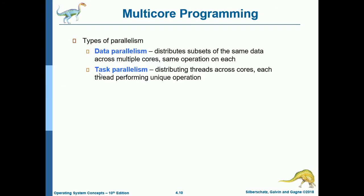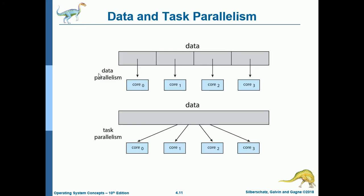There are two types of parallelism. Data parallelism distributes subsets of the same data across multiple cores and performs the same operation on each. Task parallelism distributes threads across cores, with each thread performing a unique operation. In the illustration, data parallelism assigns the same data subsets from core 0 to core 3 with the same operation, while in task parallelism each thread is assigned to a different core but performs different tasks.